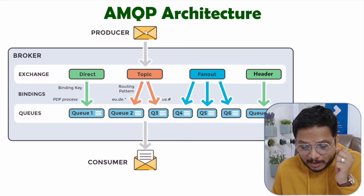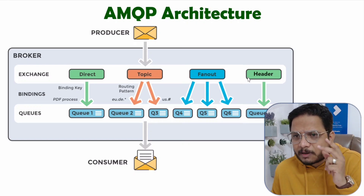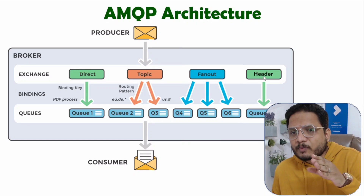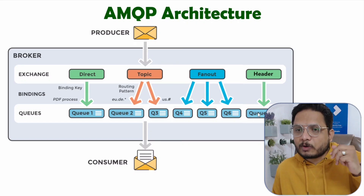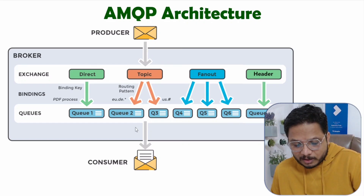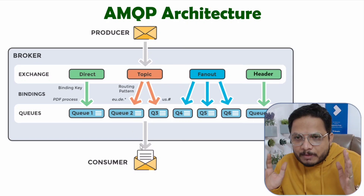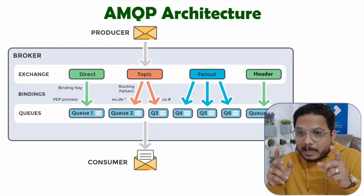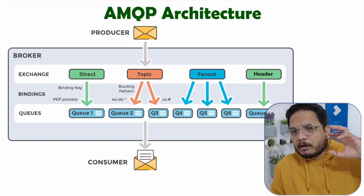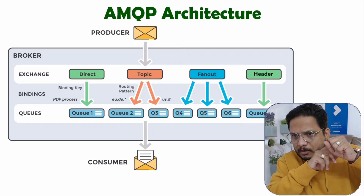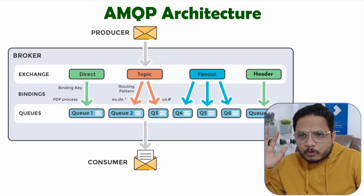Sometimes a message may come with a header exchange. If routing is based on header, the well-defined routing in the header is used to forward the message to the appropriate queue, and at last the consumer receives the message.